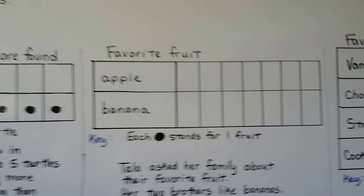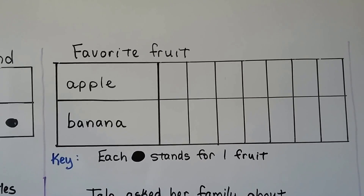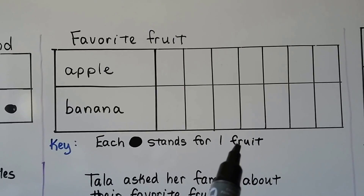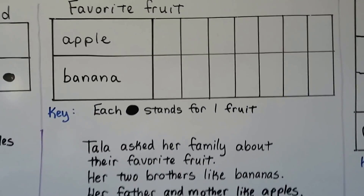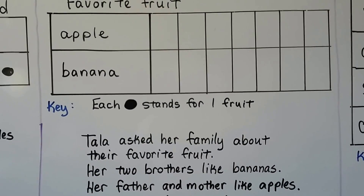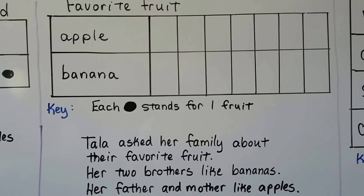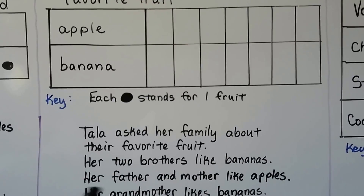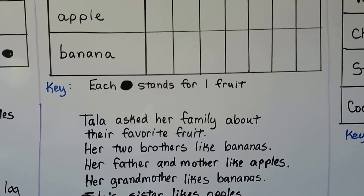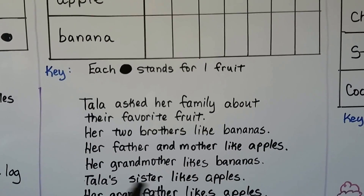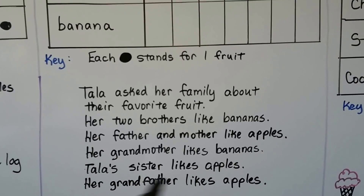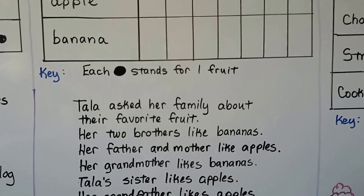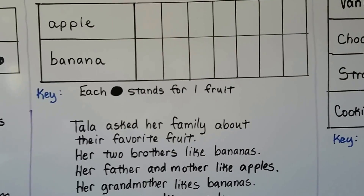Now this one is about favorite fruit — apple or banana. Each black dot, the key tells us, is going to stand for one fruit. Tala asked her family about their favorite fruit. Her two brothers like bananas, her father and mother like apples, her grandmother likes bananas, her sister likes apples, and her grandfather likes apples.